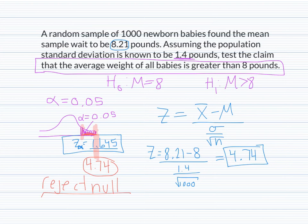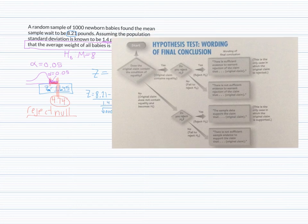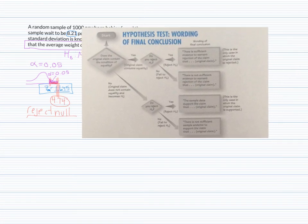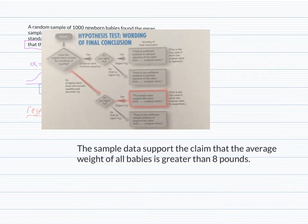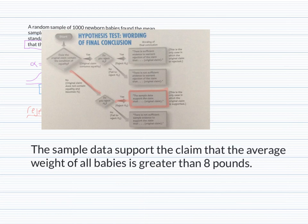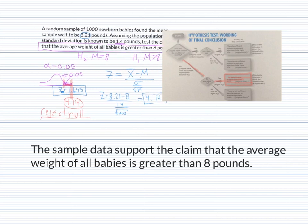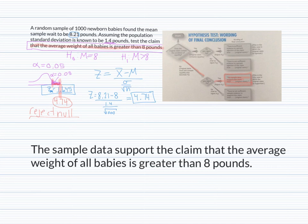Now let's make a conclusion based on that using the flowchart. Did the original claim contain equality? No — the original claim was that the mean is greater than 8 pounds, which is not equality. Then, did we reject the null? Yes, we rejected the null. Therefore, the final conclusion is: the sample data support the claim that the average weight of babies is greater than 8 pounds. That is our final conclusion of the hypothesis test.